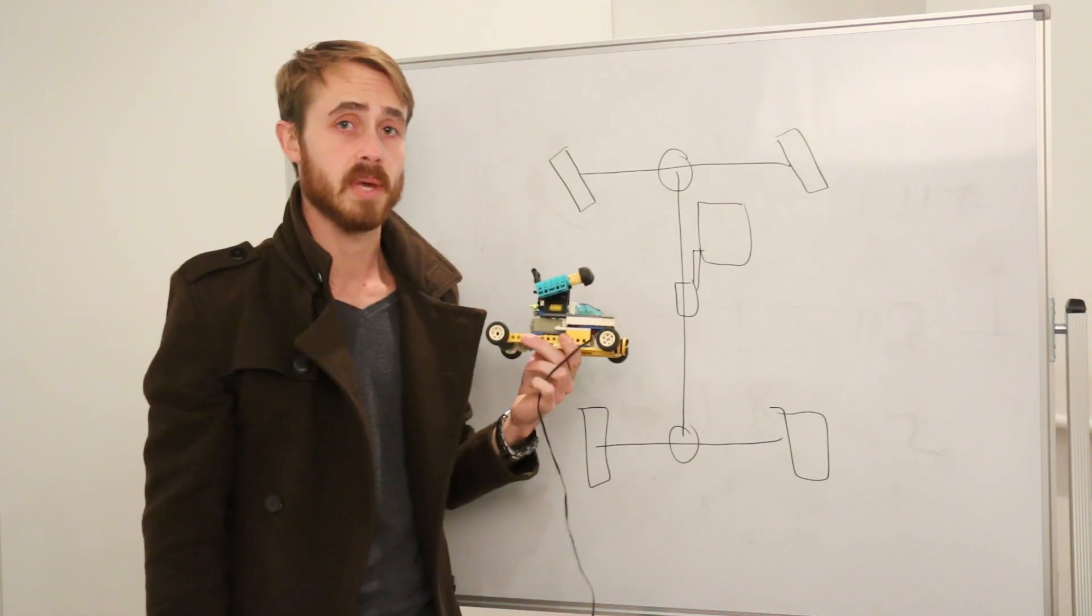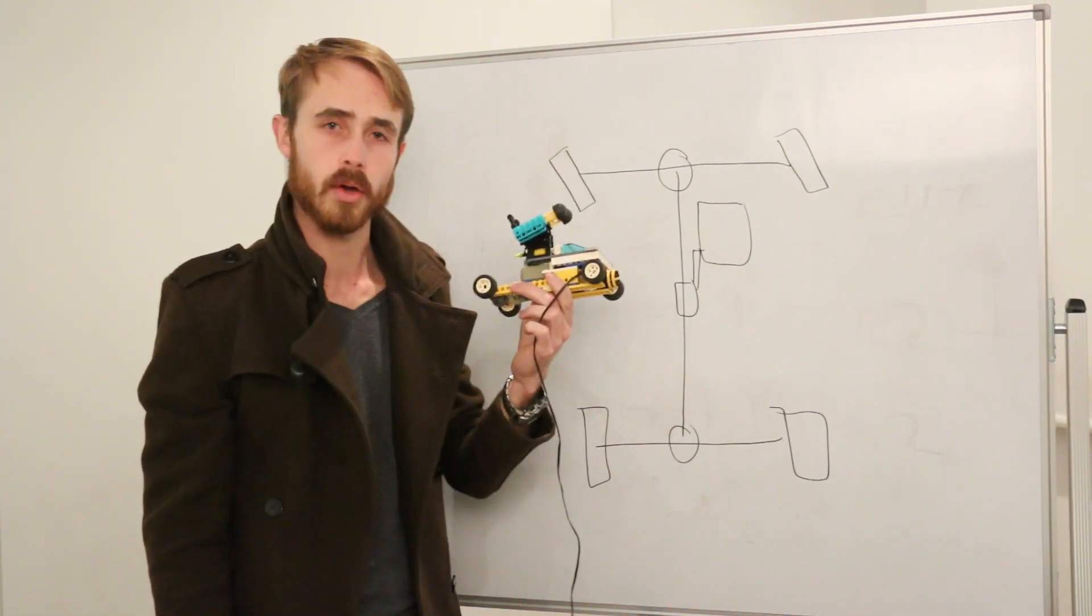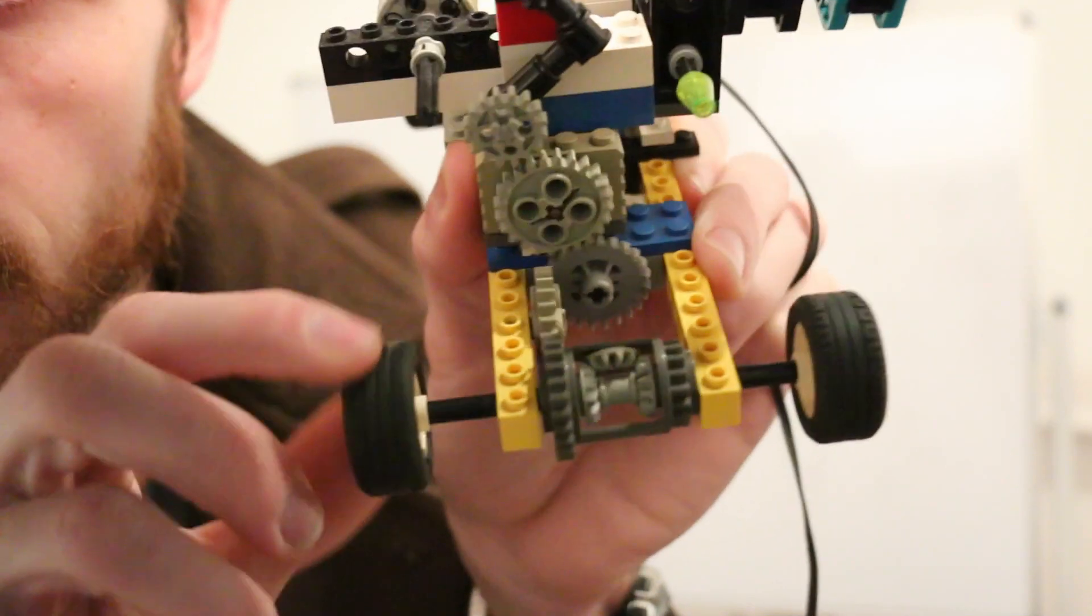Of course, the easiest way to explain the center differential is with a bit of Lego. In this model Lego car here, we have a differential at the back.